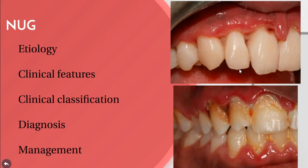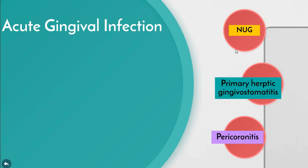Scaling is also performed as part of management where sensitivity permits, sometimes requiring topical anesthesia or infiltration. After the disease process has diminished, complete gingival curettage and root planing should be done. Supportive treatment consists of copious fluid consumption and administration of nutritional supplements, because this condition affects the whole body.